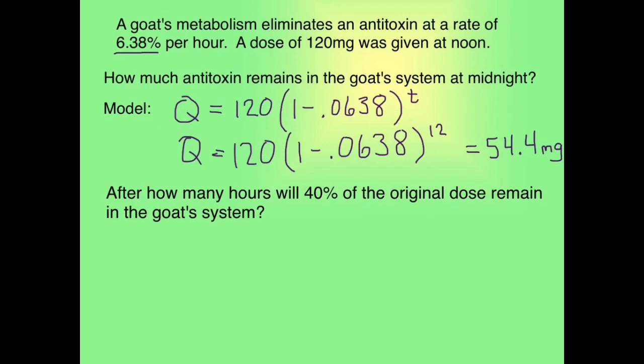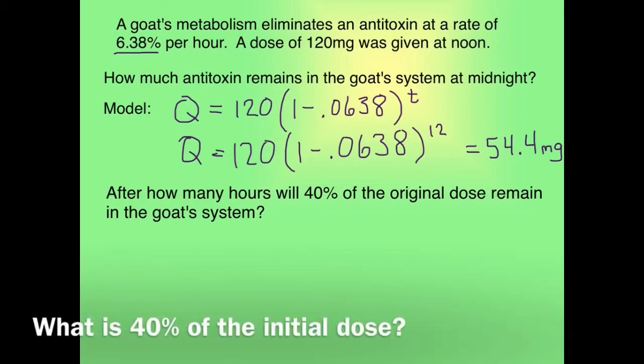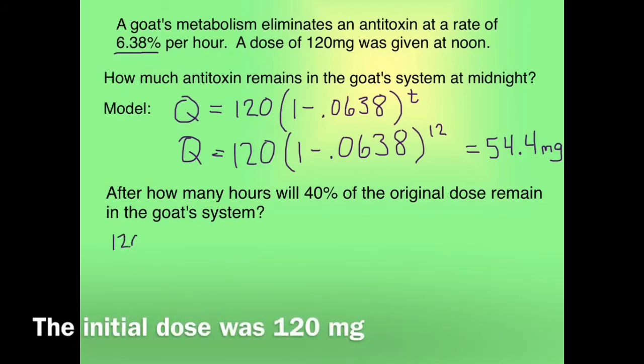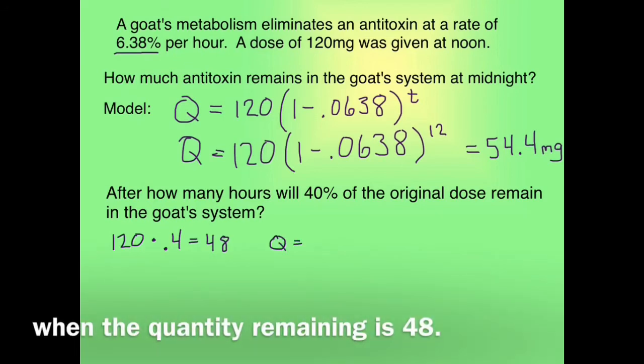Now it asks, after how many hours will 40% of the original dose remain in the goat's system? The first question we have to answer is, what is 40% of the initial dose? The initial dose was 120 mg, and 120 times 0.4 is 48. So we want to know when the quantity remaining is 48.